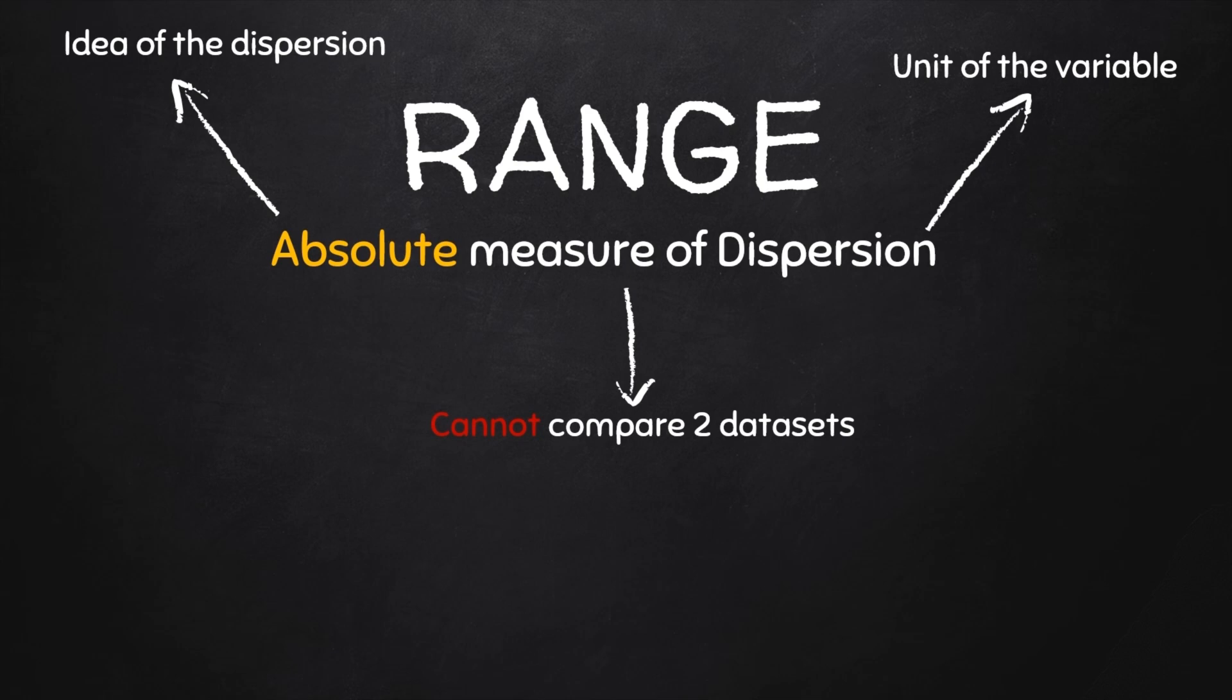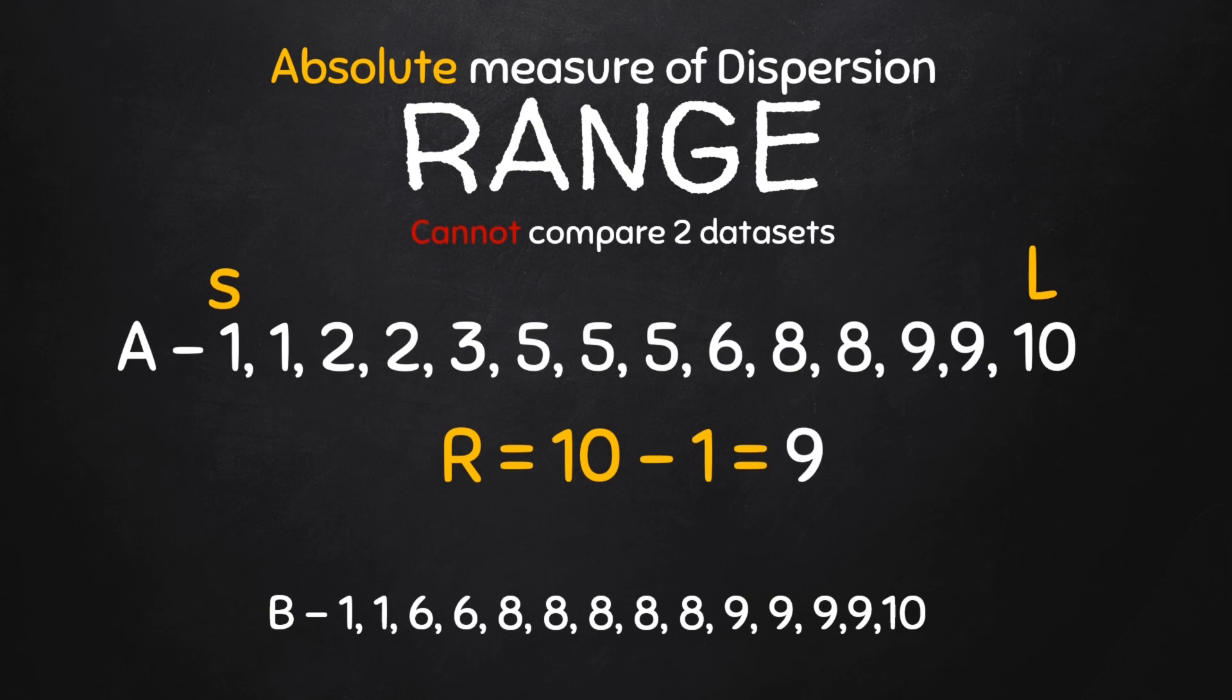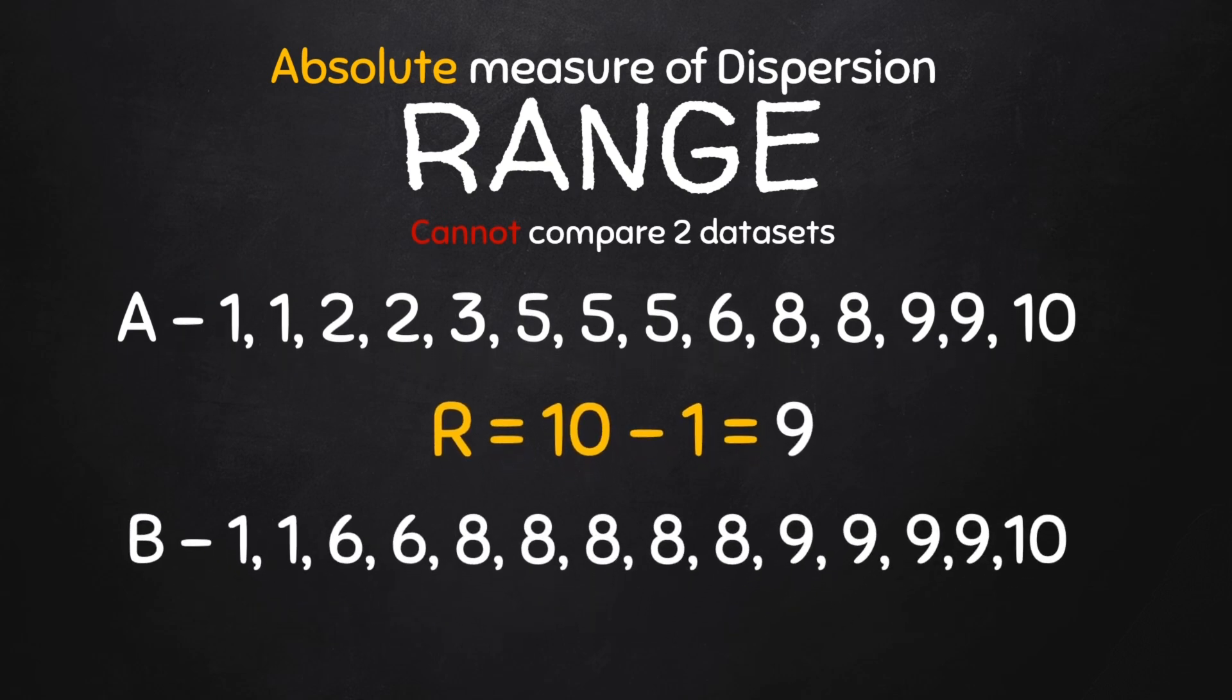So for example, let's look at these two data sets, A and B. The range of the first is 10 minus 1, which is 9. And then the range of the other data set is also 10 minus 1, which is 9. Can we now say the spread or the dispersion of both data sets are the same? No, we cannot.